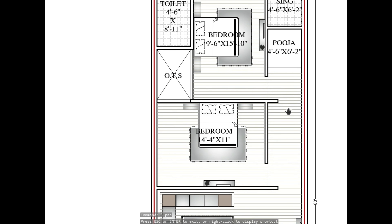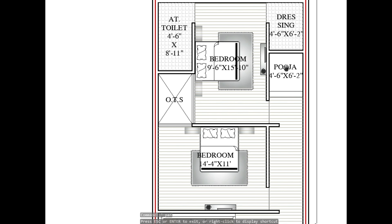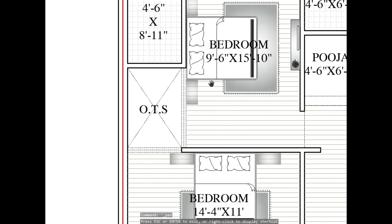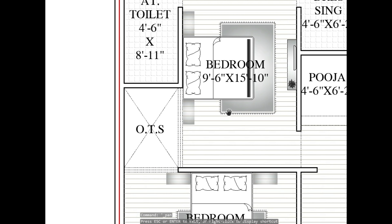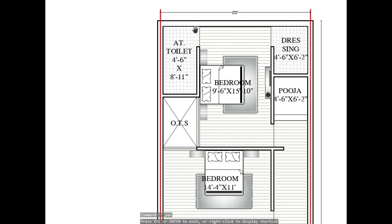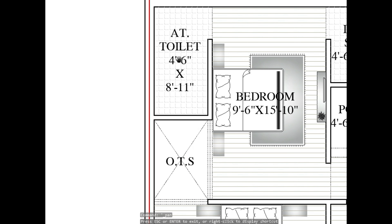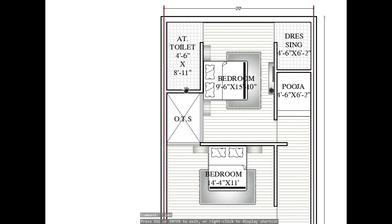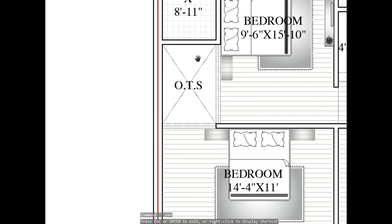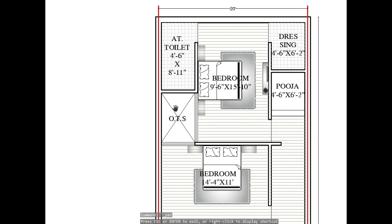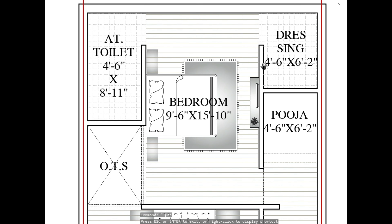Here is the master bedroom with a dressing area and an attached toilet. The size of the master bedroom is 9 feet 6 by 15 feet 10. We have an attached toilet with a size of 4 feet 6 by 8 feet 11. We have also added ventilation for this bedroom and attached toilet. So this is our master bedroom.